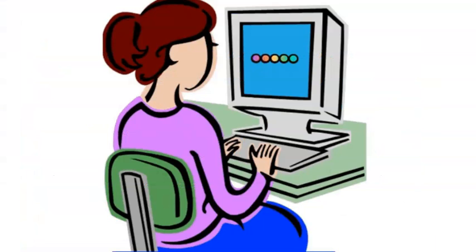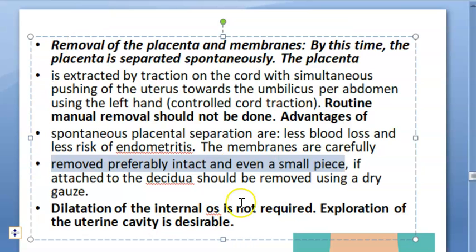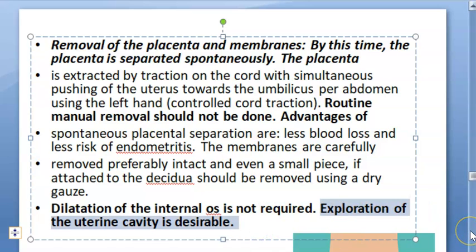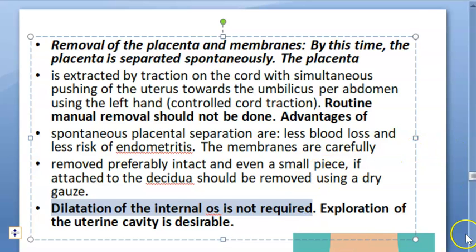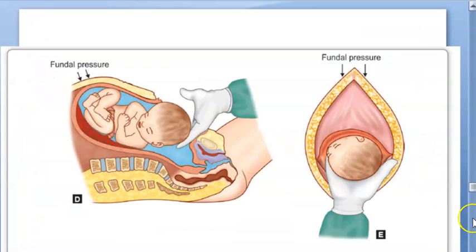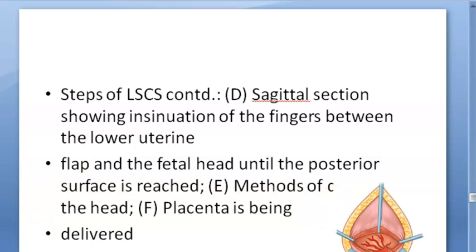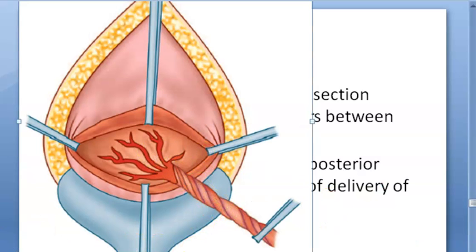You have to check if the placenta is perfect. You have to check for all its parts and all cotyledons. Everything should be fine. You will check if anything is there left in the uterine cavity. You will explore that. Dilatation of the internal os is not required. You are expecting her to bleed after this, but they are saying you don't have to dilate.